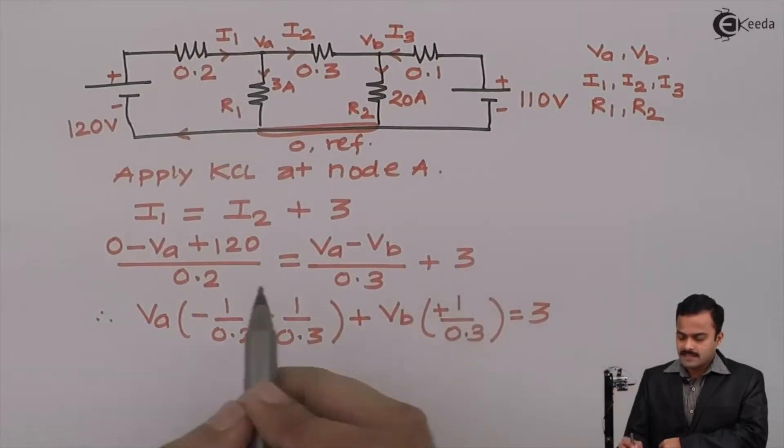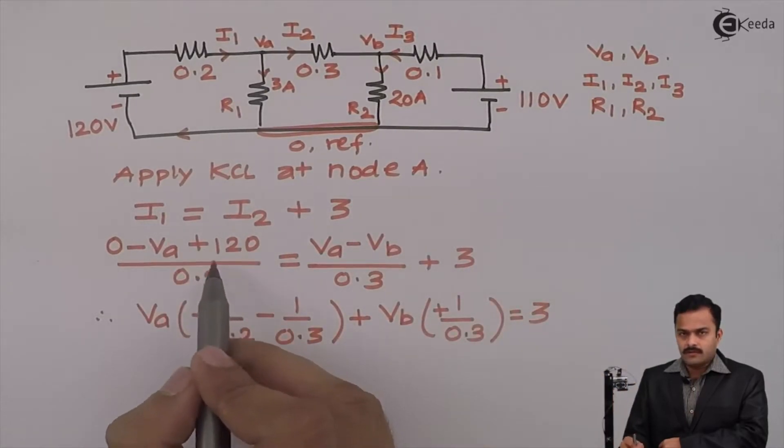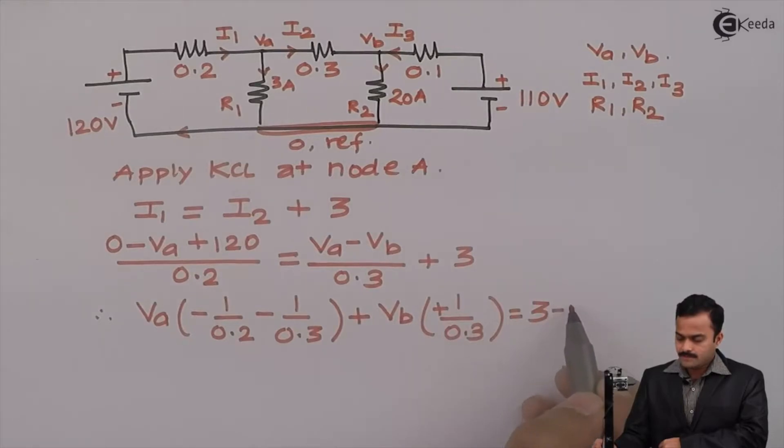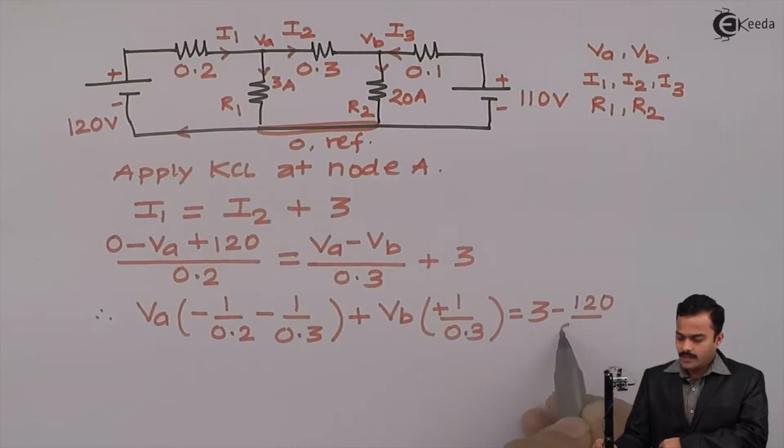Vb minus 1 upon 0.3 equal to 3. I will keep as it is. And this constant will go that side. So, it's minus 120 divided by 0.2. I will consider this as equation 1.